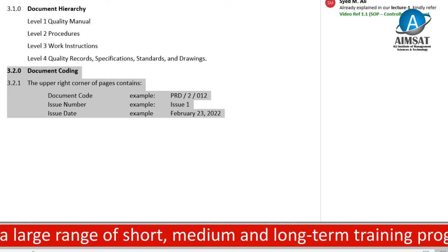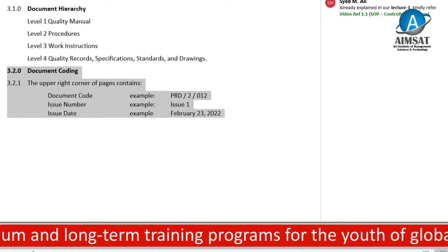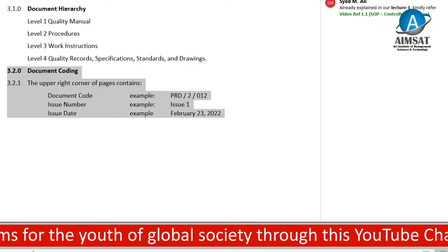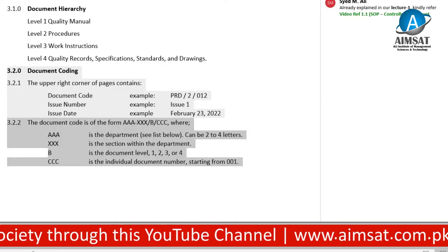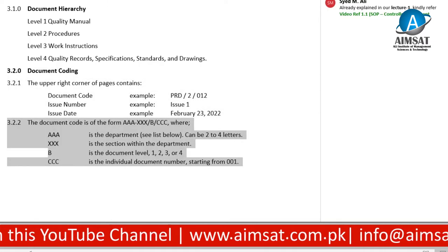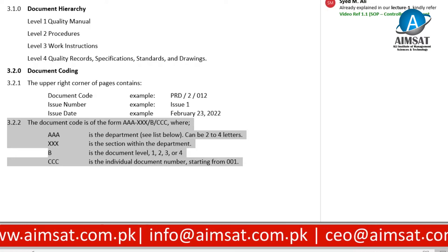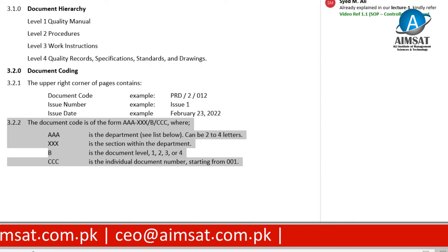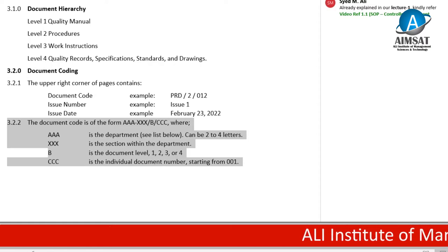Similarly, the issue number indicates this is first time issued — issue one. The issue date is the date this document is issued by the management representative and distributed to process owners. The document code is of the form AAA-XXX-B-CCC, where AAA stands for the department (two to four letters), XXX is the section within the department, B is the level of the document, and CCC is the individual document number starting from 001.